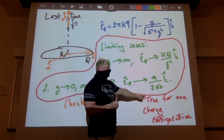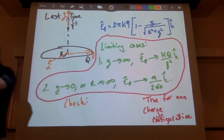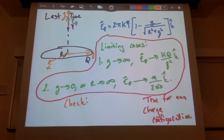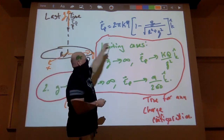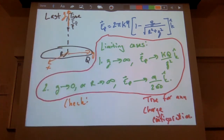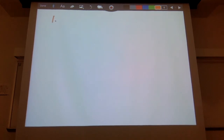This is true in any case — any object viewed from infinitely far away must look like a point charge, and from infinitely close it must look like a sheet of charge. Let's check case number one: let z go to infinity.